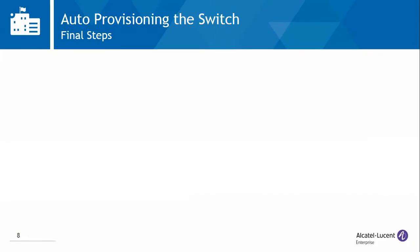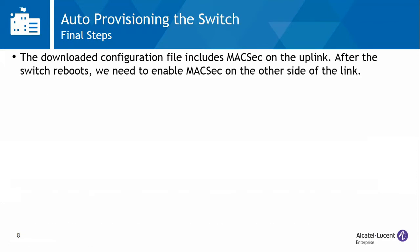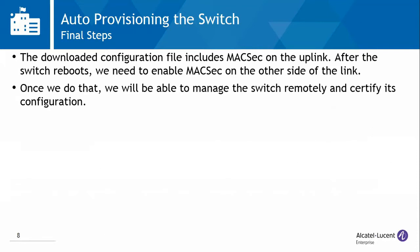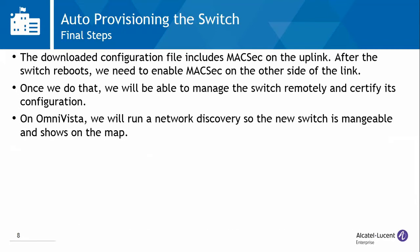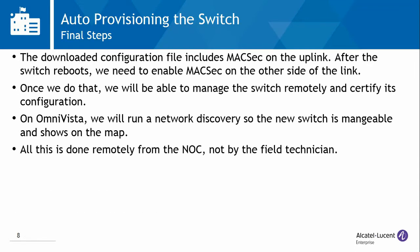There are a few additional steps to perform before the switch can be managed from the NOC. The downloaded configuration file includes MagSec on the uplink. After the switch reboots, we need to enable MagSec on the other side of the link. Once we do that, we will be able to manage the switch remotely and certify its configuration. On OmniVista, we will run Enable Discovery so the new switch is manageable and shows on the map. All this is done remotely from the NOC, not by the field technician.